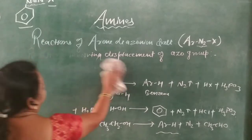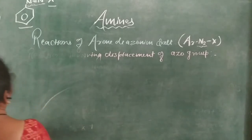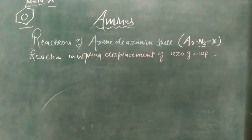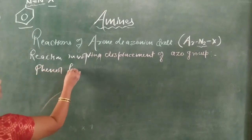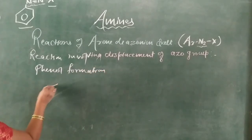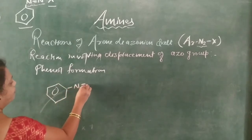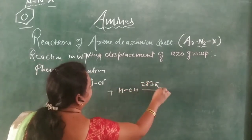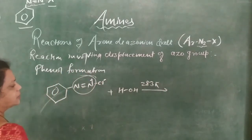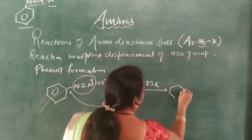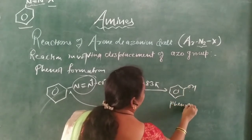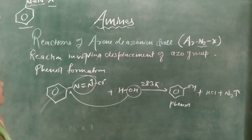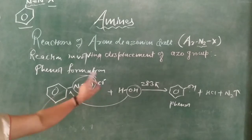Next is phenol formation, involving reactions with displacement involving water. Benzene diazonium chloride — N≡N+ Cl− — reacts with water. N2 gets displaced and OH combines to form benzene-OH, that is phenol, plus HCl and N2 gas. This is phenol formation from aryl diazonium chloride or benzene diazonium chloride.